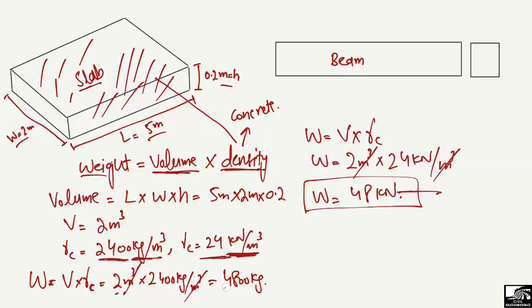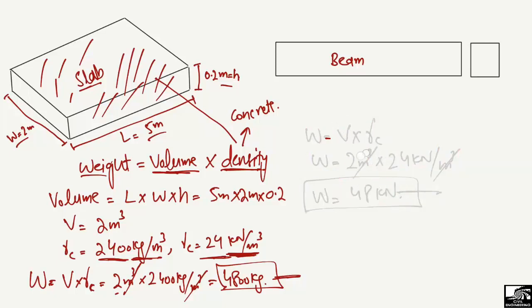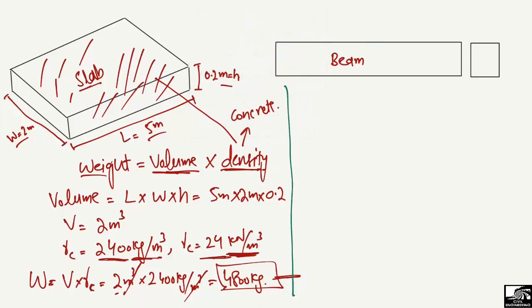So, 48 kilonewtons is the weight of the slab in kilonewtons, and 4800 kilograms is the weight in kilograms. That was the basic method to find the weight of a structural member. Now, let's do this for a beam element. The beam has a length of 10 meters, a width of 0.3 meters, and a depth or thickness of 0.5 meters.